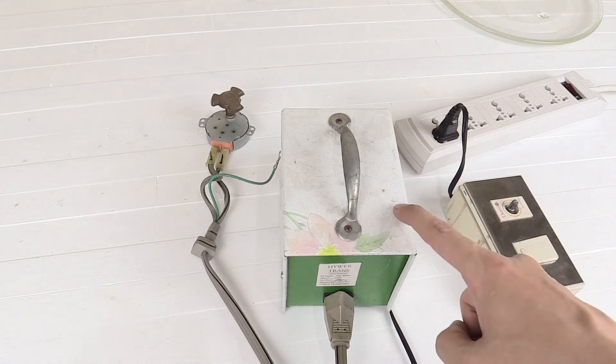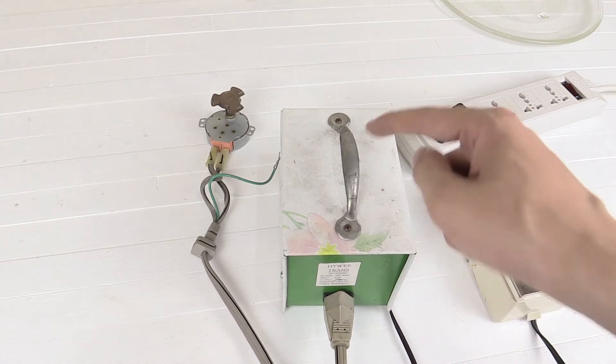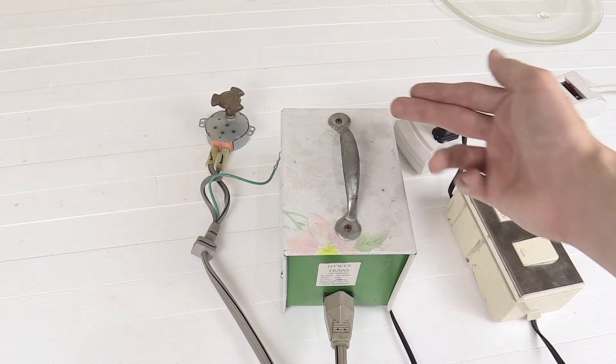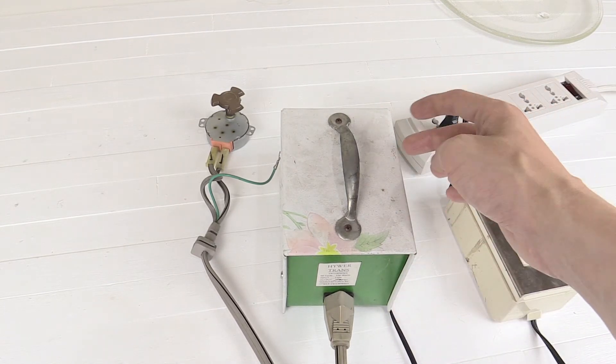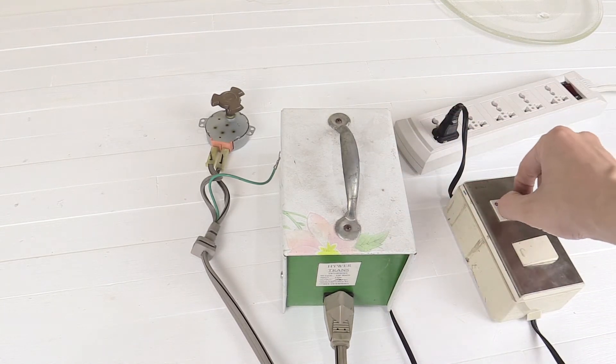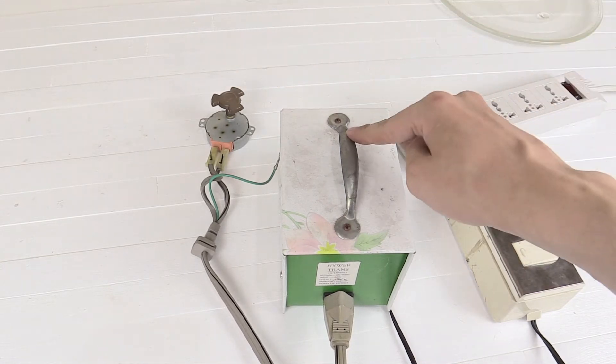Connected to the dimmer is a transformer. This is 220 volts to 110 but of course it's not getting the full 220 or at least not full wave because we've got our dimmer switch here. And then finally the motor is connected to this.